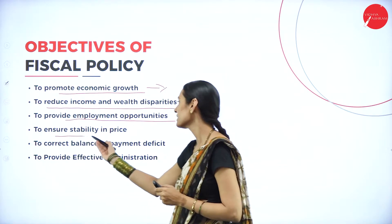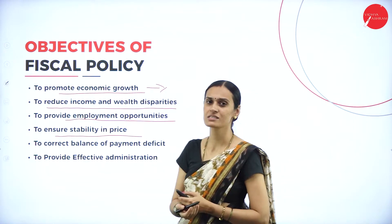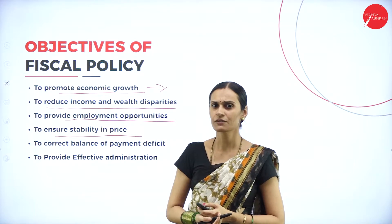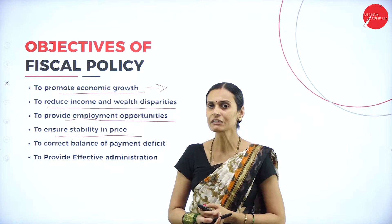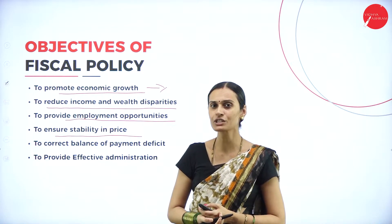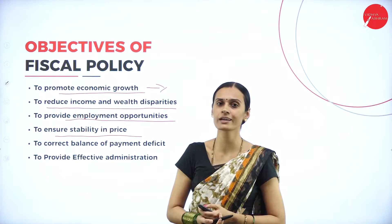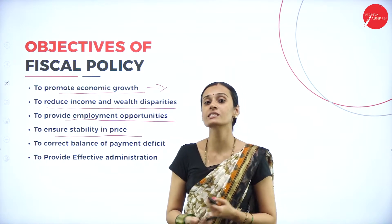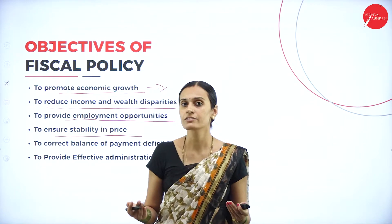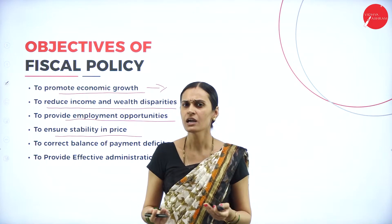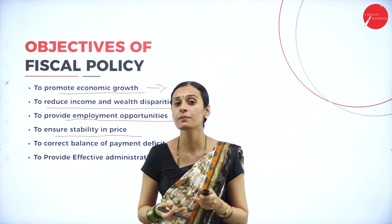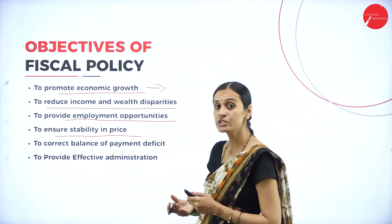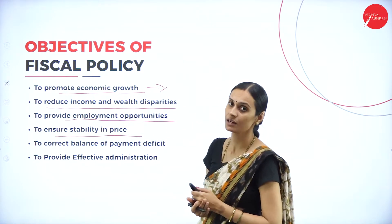The fourth objective is to ensure stability in prices — prices of very essential commodities. Fluctuations in prices, inflation, and deflation are common phenomena in the economic system. By providing subsidies for essentials like gas, electricity, and water supply, the government helps maintain affordable prices for common people. This is a real objective of fiscal policy.